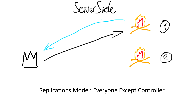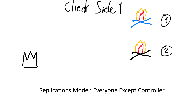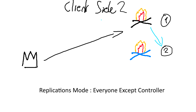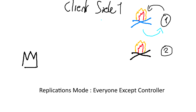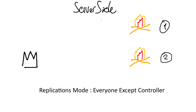As client side two, we receive the callback because the value was modified. But if we modify this value as a controller, we will receive the callback bound to this value. The server will not receive it because it's the controller that modified it for its own purposes, and client two will not receive it either.